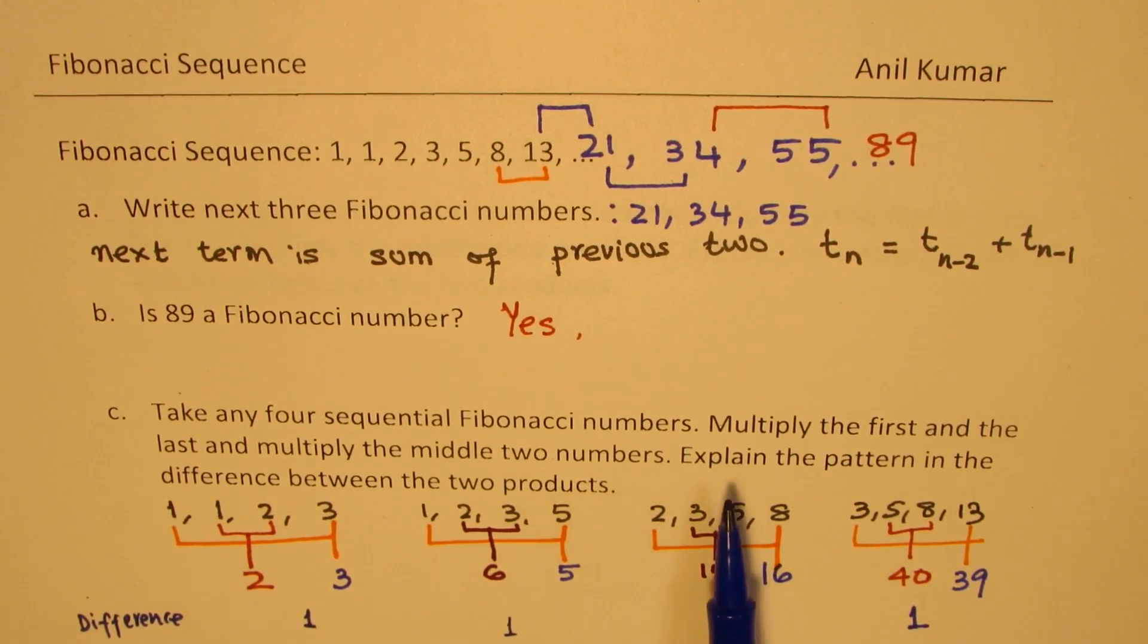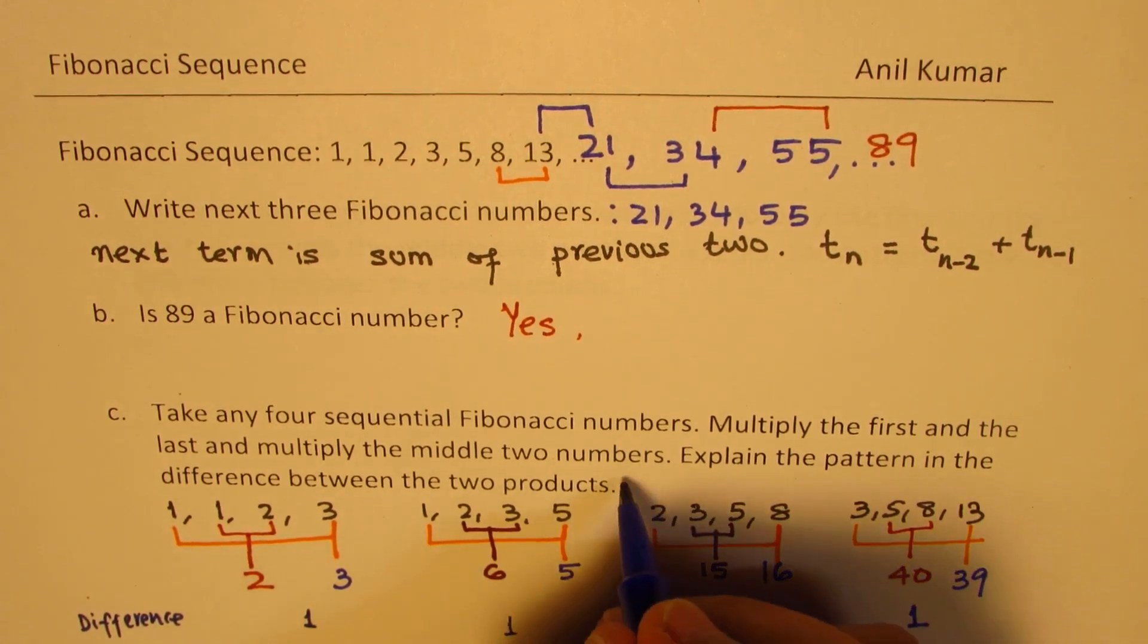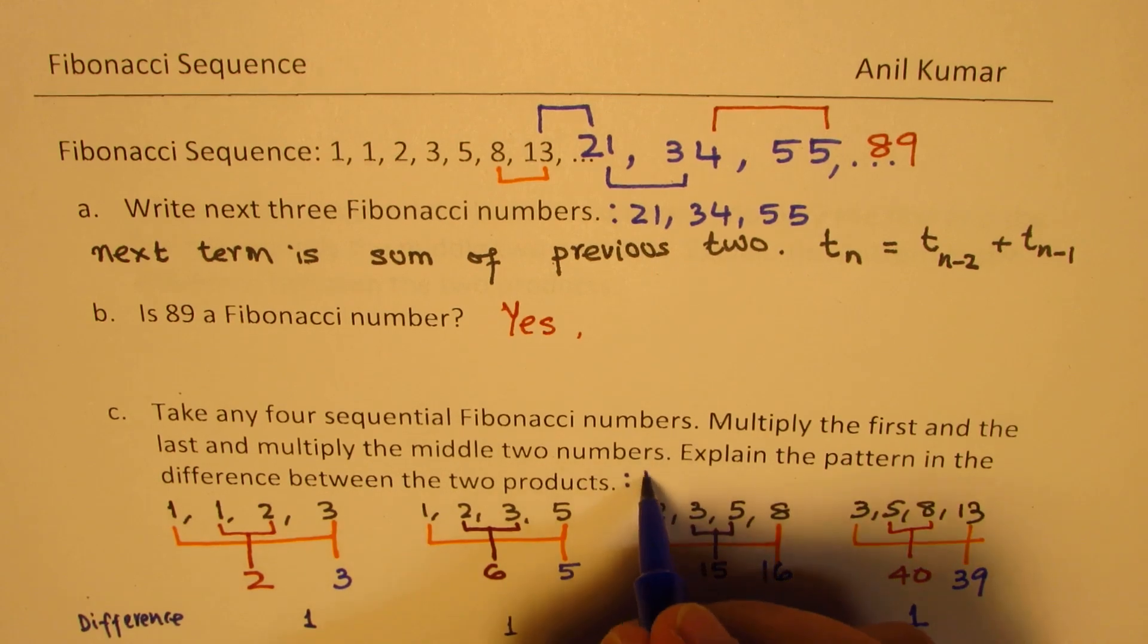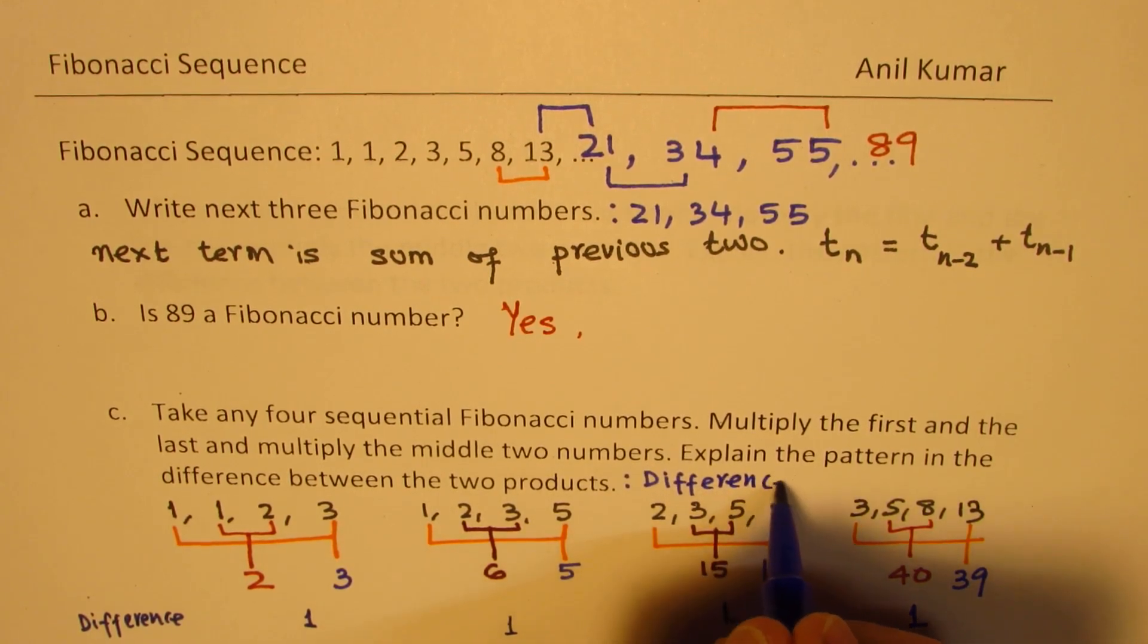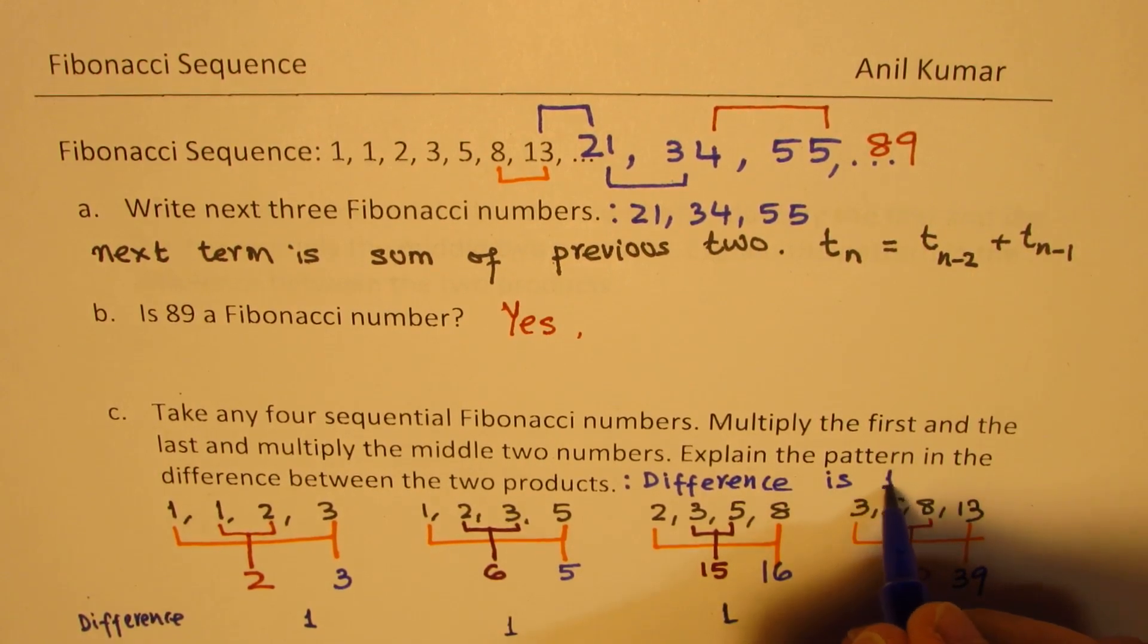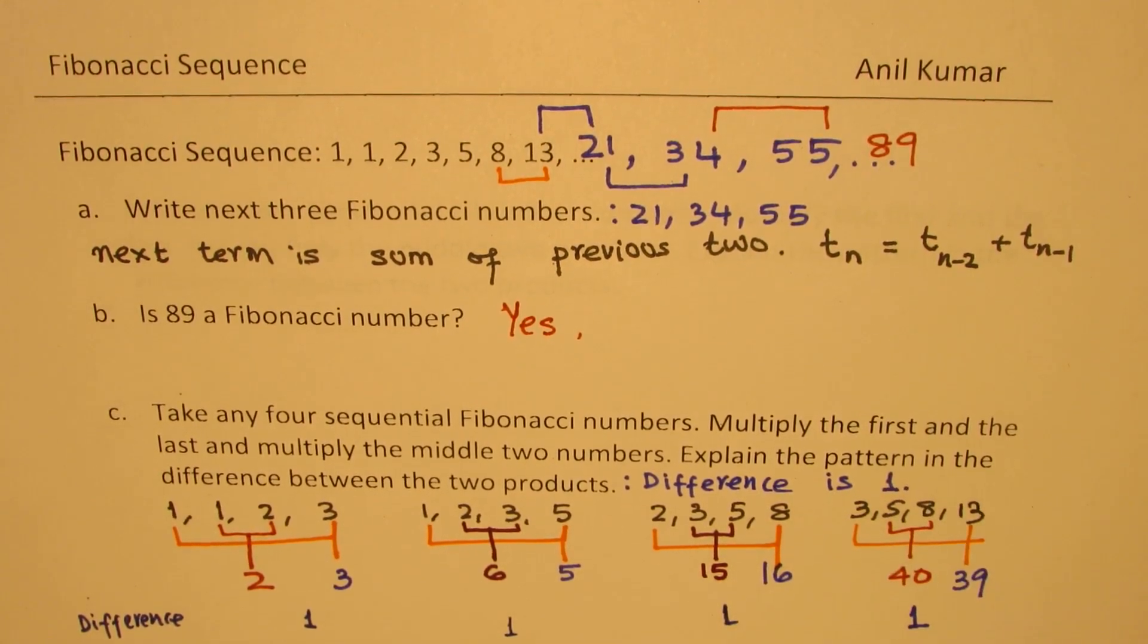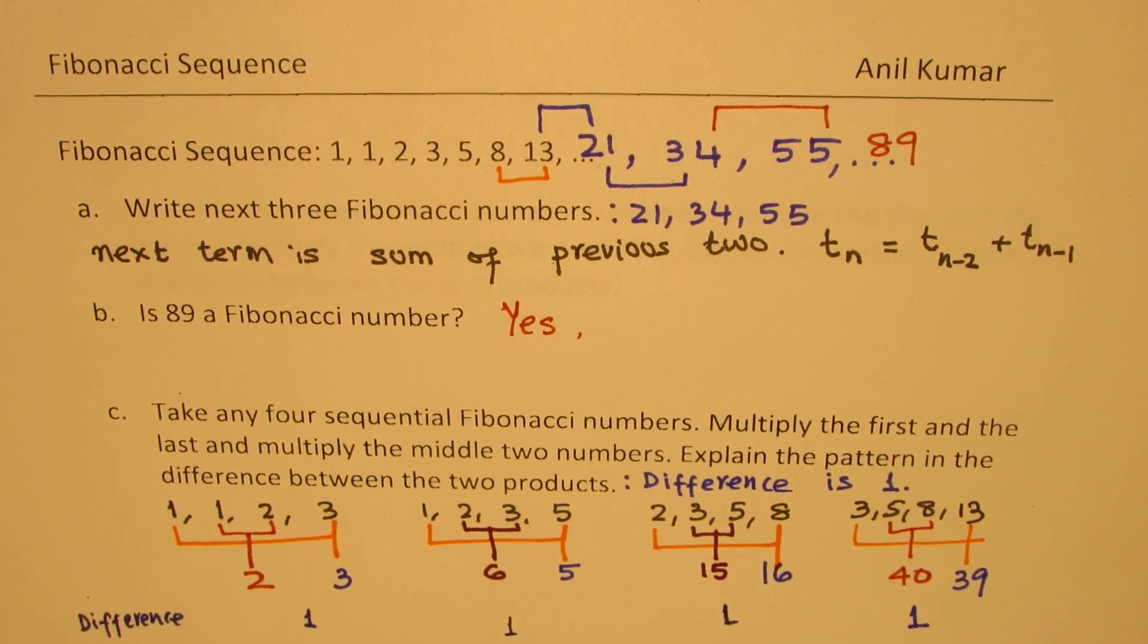Now I think with all that, you can explain the pattern in the difference between the two products. The difference is always 1. You could also say, if you're taking outer minus inner, it could be 1 or negative 1. But in general, we see that the difference is 1.